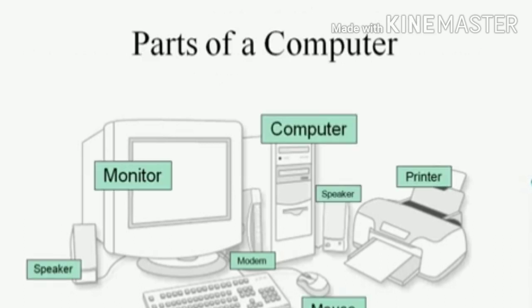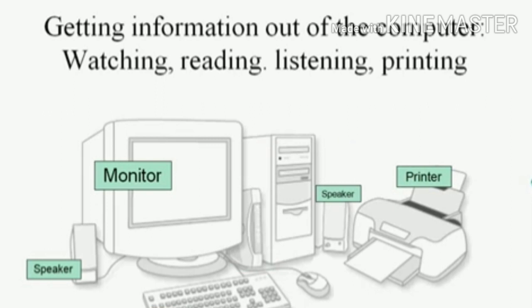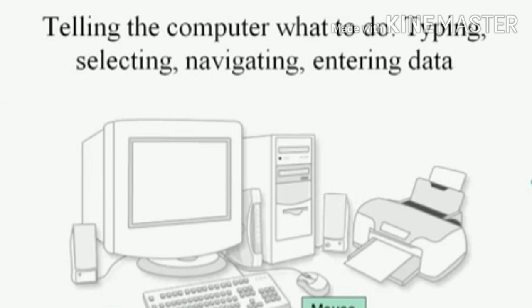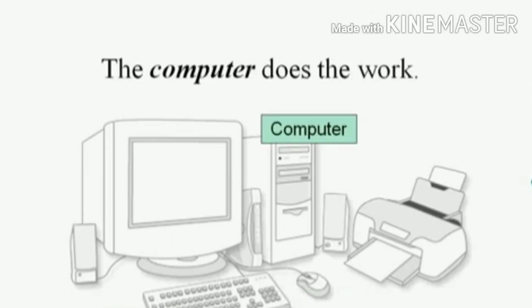These are all the parts put together. You can think about the monitor, the speaker, and the printer as three different ways to get information out of the computer — by watching, reading, listening, and printing. There are only two ways to get information into the computer immediately, and that's the keyboard and the mouse. But the computer is what does the work.